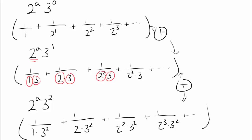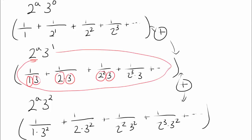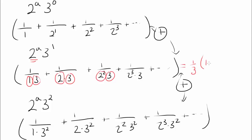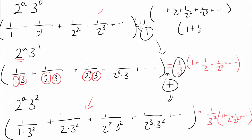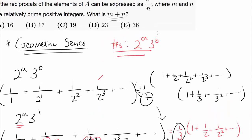We can factor out 1/3 from the second group and 1/9 from the third, and each time we get the same sum: 1 plus 1/2 plus 1/4 and so on. So the total sum over numbers of the form 2^a × 3^b equals the product of two infinite geometric series: (1 + 1/2 + 1/4 + …) times (1 + 1/3 + 1/9 + …).